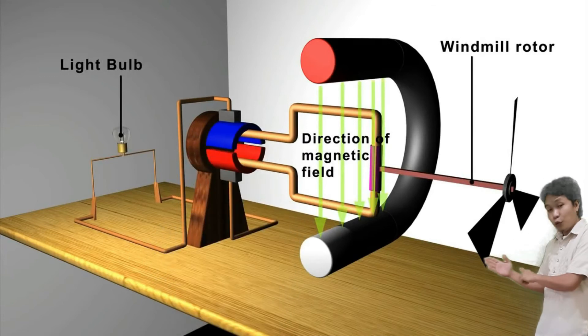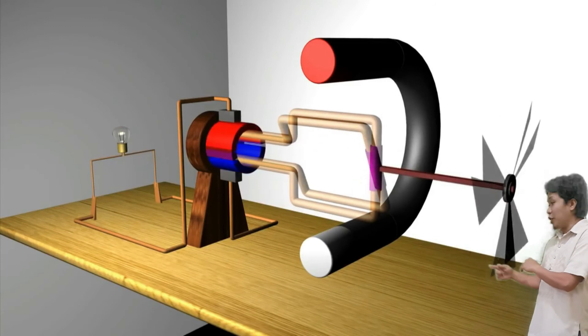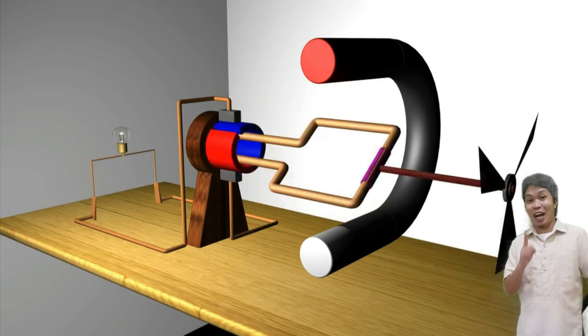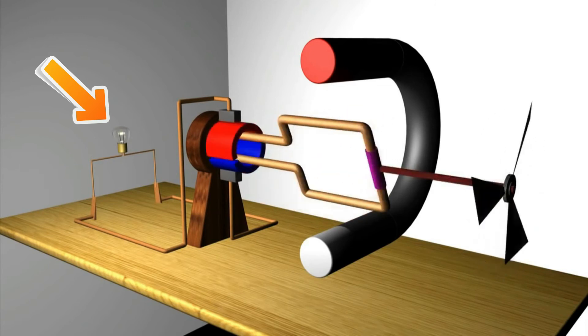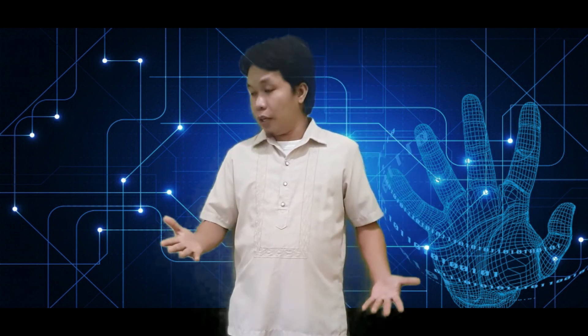So as you can see, as the wind rotates the blades, an electrical current is produced. So that is how an electric generator works, and those are the differences between electric motor and electric generator.